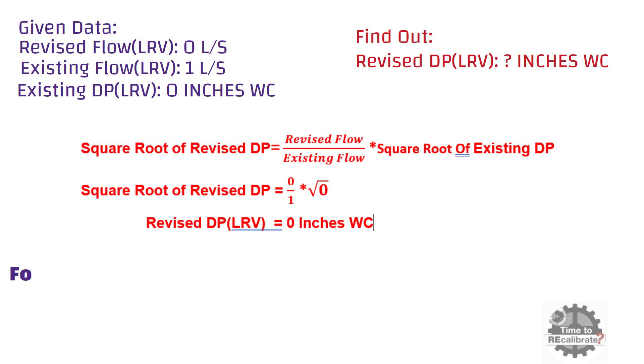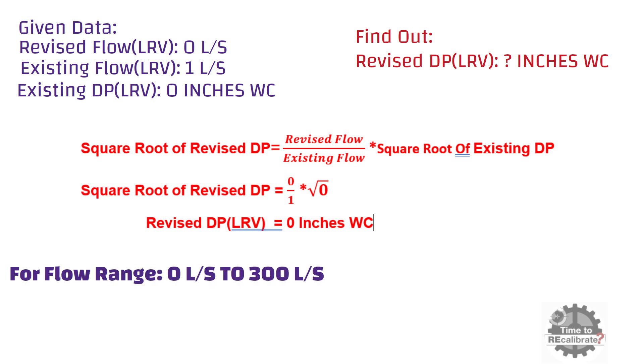In conclusion, when the flow range is 0 to 300 liters per second, the differential pressure value must be 0 to 225 inches water column.